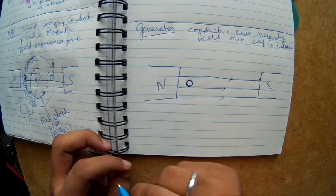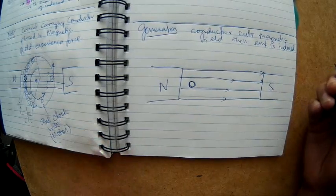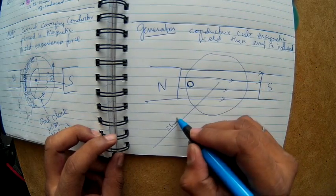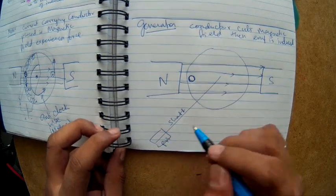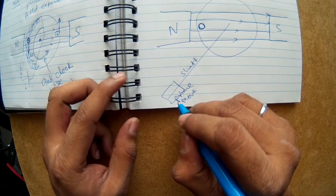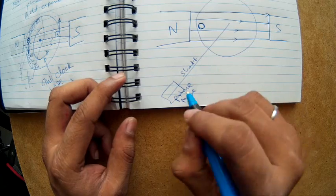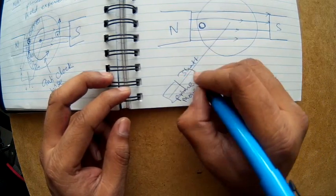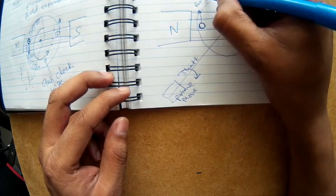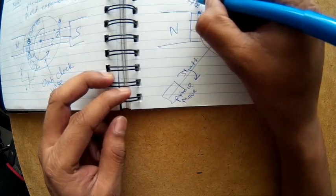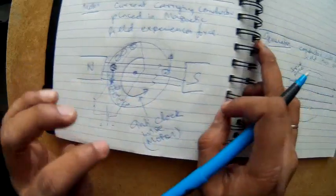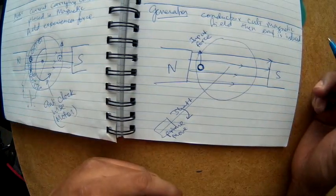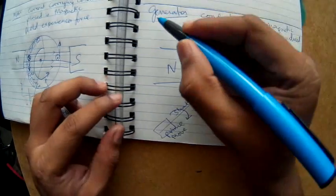Now I place a conductor, but I don't yet know the direction of the current in it. I assign a direction of motion: the conductor is part of an armature connected to a shaft, which is connected to a prime mover. The prime mover rotates the shaft in the clockwise direction, so the mechanical force on this conductor is upwards. The question is: what is the direction of the induced EMF and hence the current? For a generator, we apply the right hand rule.